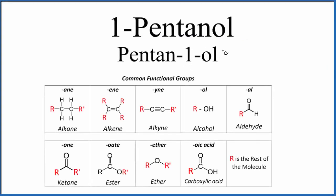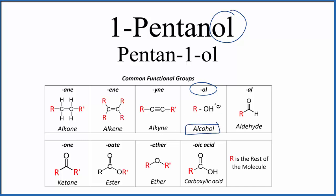To write the structure, the first thing we notice is this 'ol' up here. That 'ol' tells us we have an alcohol. So we'll have carbon atoms, but there'll be an OH group attached to one of the carbons. That's what makes it an alcohol.